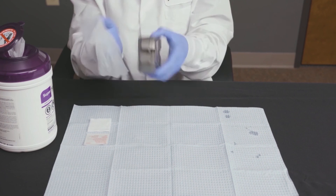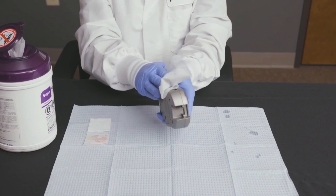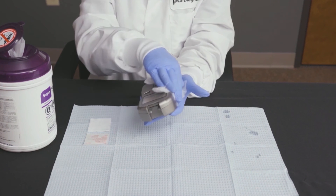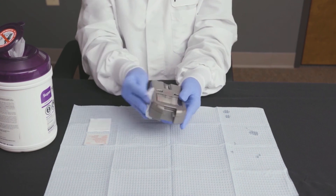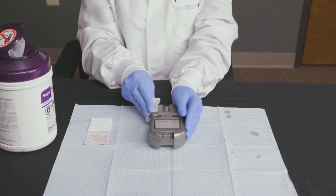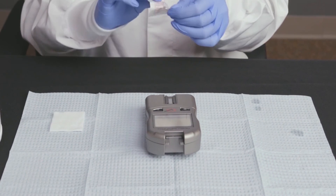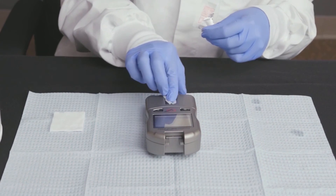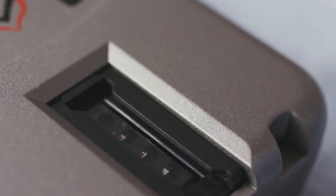Then, disinfect the analyzer. Thoroughly wipe all areas of the analyzer again with the wipe you set aside. Keep the surfaces of the analyzer damp with disinfectant for two minutes — this is long enough to kill bloodborne pathogens. Once the necessary disinfectant contact time is up, allow the device to air dry completely. Clean the optical glass with an alcohol wipe to remove any residue left behind by the disinfectant, then dry with gauze.